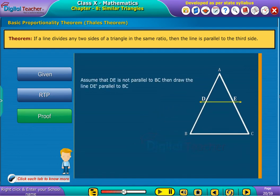Assume that DE is not parallel to BC. Then draw the line DE' parallel to BC.